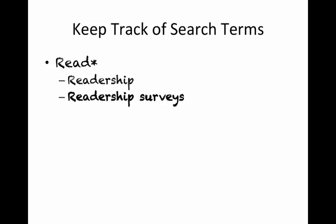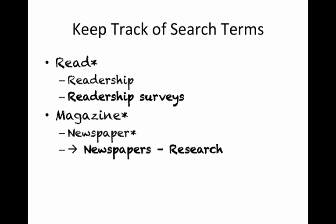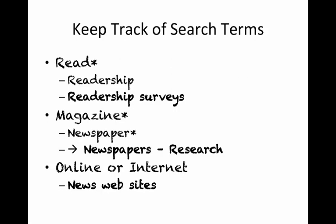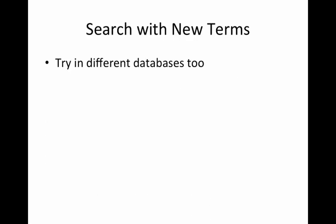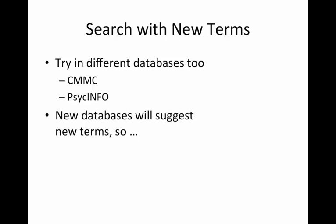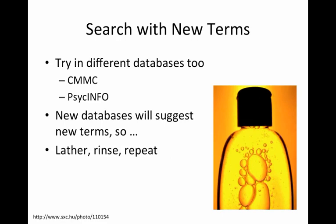I strongly encourage you to keep track of your search terms. Read* and readership, magazine* also leads to newspapers, which leads to newspapers research. We started with online or internet and are adding news websites. Keep track of these, cross off the ones that don't work, write down new ones, and redo your search with new terms. Try these in different databases like CMMC, PsycINFO, and others. When you go into new databases, you'll get ideas for new terms. I recommend: lather, rinse, and repeat.